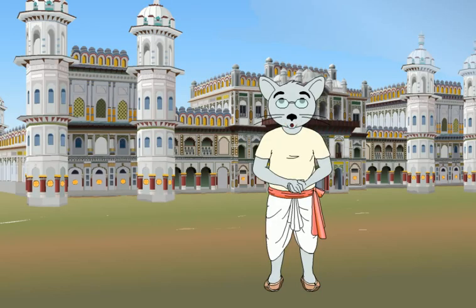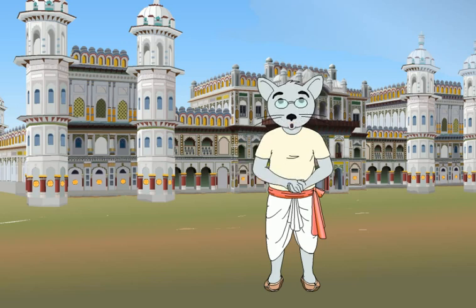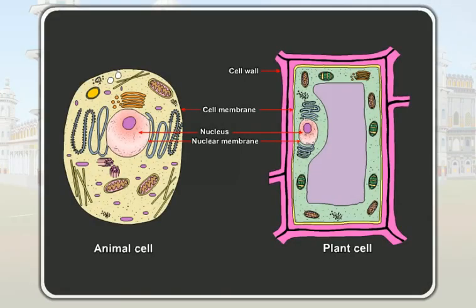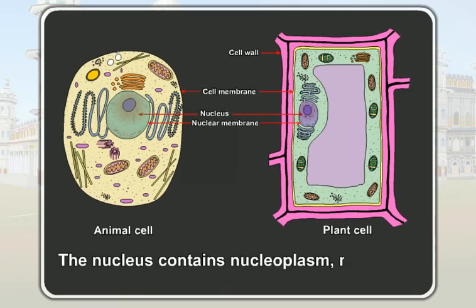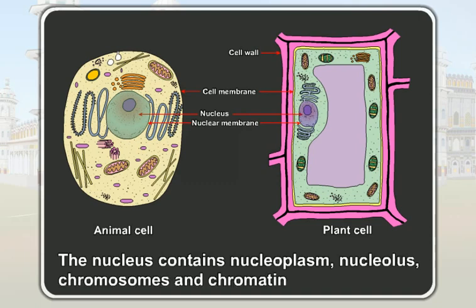Students, who controls the activities of your family? Your father controls it, doesn't he? Similarly, the nucleus controls all the activities of the cell. The nucleus contains nucleoplasm, nucleolus, chromosomes and chromatin fibres.